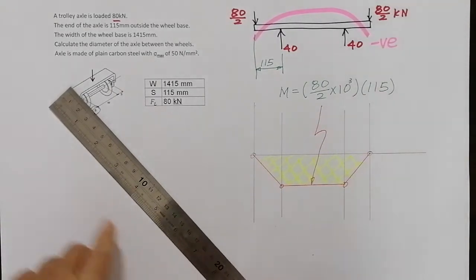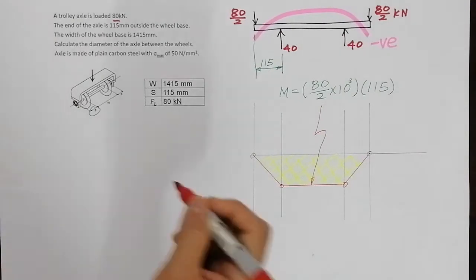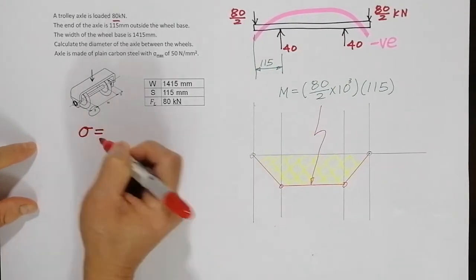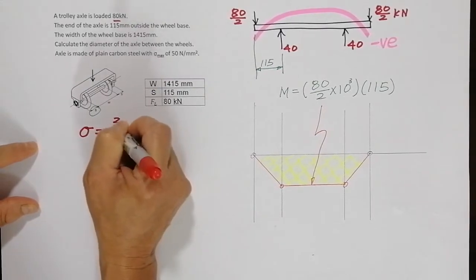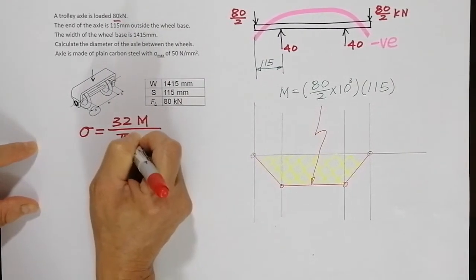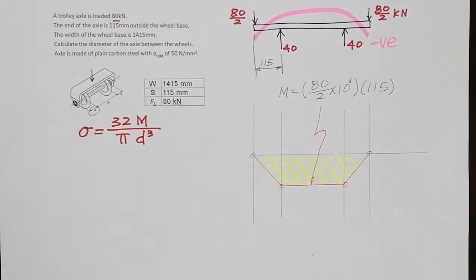Now I need to find the diameter of the shaft. The equation is always given in the formula. This equation for bending moment like this: sigma is equal to 32M over pi d cubed. Now we have to be careful about the units when we use this equation.